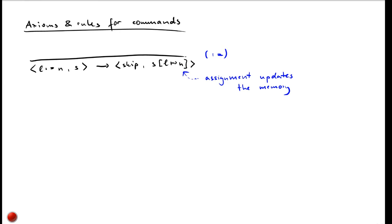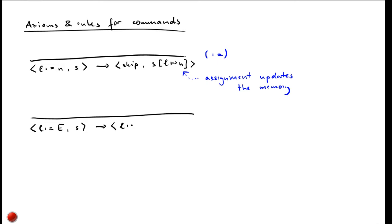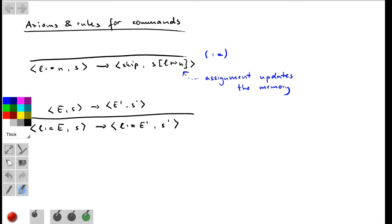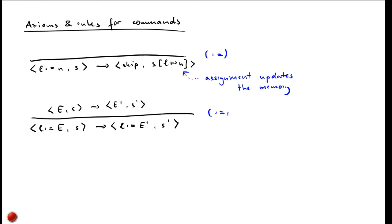To actually use the assignment rule, we may first have to evaluate the expression on the right-hand side. If our program is an assignment into location L with a complex expression E on the right, we can reduce it to 'L gets E prime' with a possibly updated store S prime, provided there is a transition from E and store S to E prime and store S prime. This rule is called the right-hand side of assignment rule.